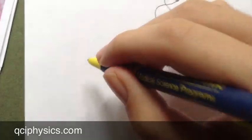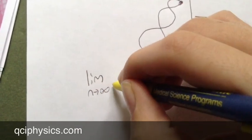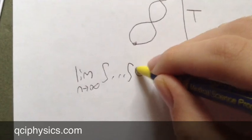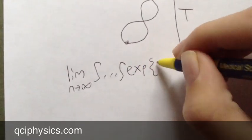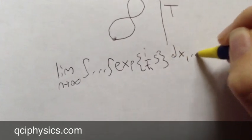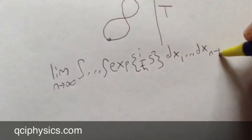Now, the sum of all contributions from all possible paths is given by the limit as n approaches infinity of a multiple integral of the contribution, which is e to the i over h bar s, with s the action, over dx sub 1 through dx sub n minus 1.